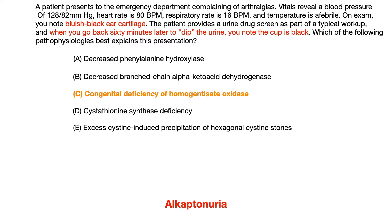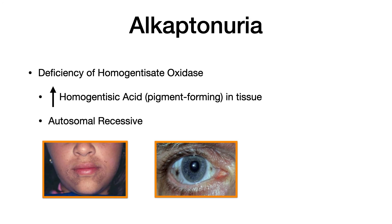The key takeaway is that if you see ears, hands, or urine that's bluish black and discolored, you want to think about alkaptonuria. This question was a third-order question. The first part required you to identify the disease, and the second part required you to match the disease with its pathophysiology. In summary: homogentisate oxidase is deficient, therefore there's an increase in homogentisic acid, which is pigment forming. This is autosomal recessive, and you see blue-black discoloration in the ears, mouth area, eyes, and urine.